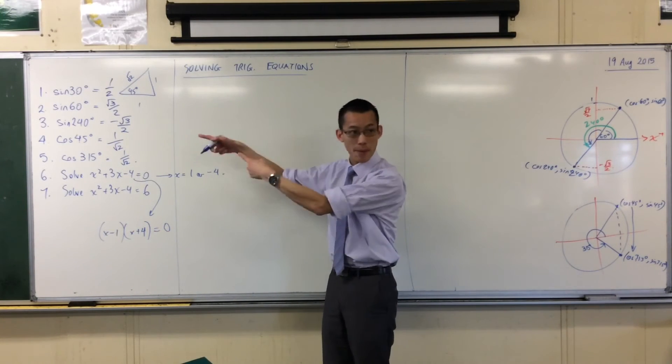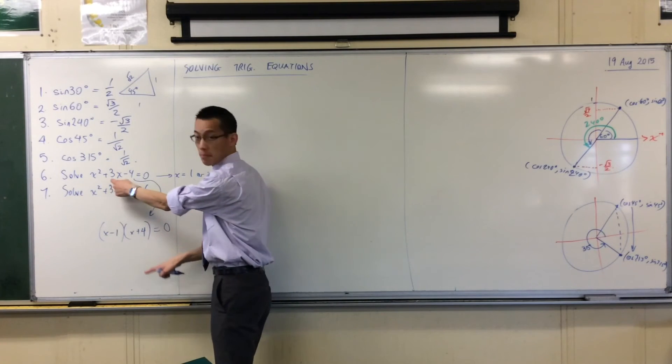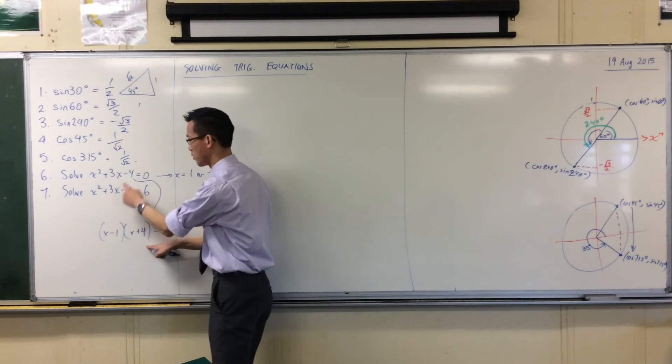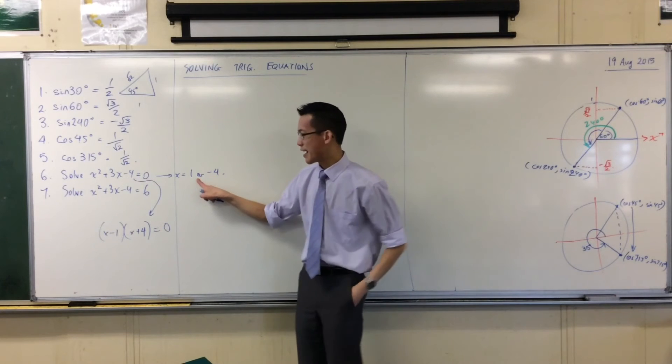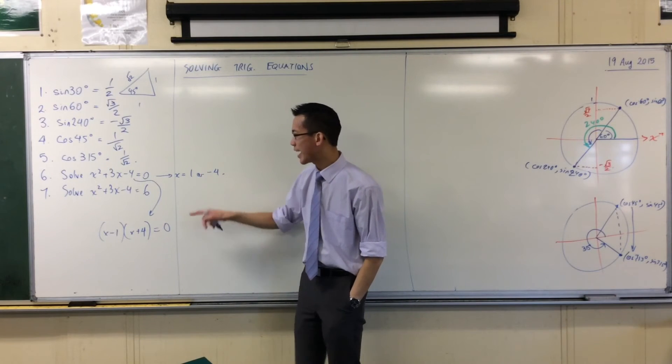The pair of numbers is going to be x minus 1, x plus 4. Does it work? It does. You can quickly go back and test. You're like, 4 plus negative 1, bam. 4 times negative 1, bam. It works. And straight out of there, you can get your solutions.